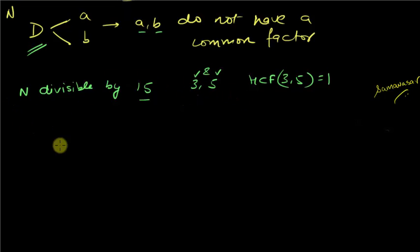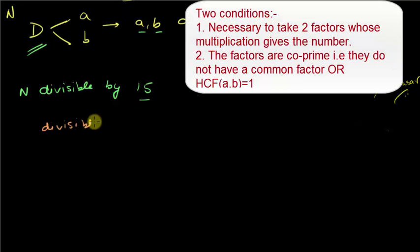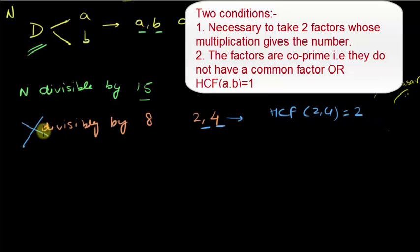Let me show you what I mean with a counterexample. If I am checking whether a number is divisible by 8, I cannot simply check whether it is divisible by 2 and 4 — this is wrong. You should understand why: 2 and 4 do have a common factor. The HCF of 2 and 4 is 2, so I cannot use this approach.